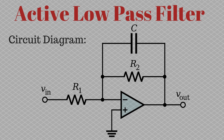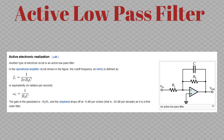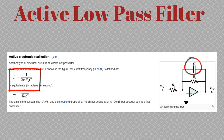Thus, the low pass filter containing R2 resistance and C capacitance becomes an active low pass filter. The formula for the critical frequency or the cutoff frequency of an active low pass filter is given by 1 divided by 2π R2 C, where R2 is the resistance and C is the capacitance. You can use this formula to calculate the theoretical cutoff frequency and then verify it experimentally.